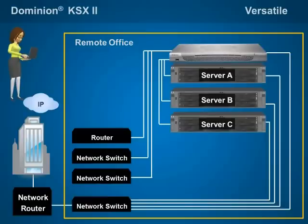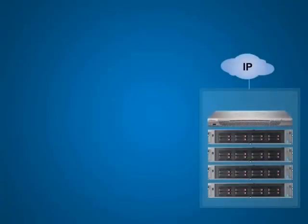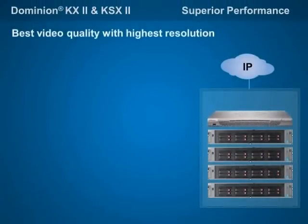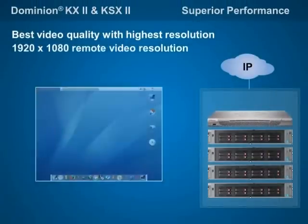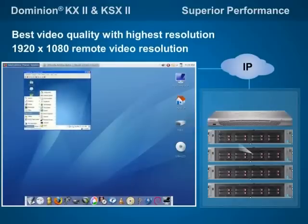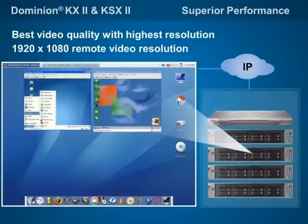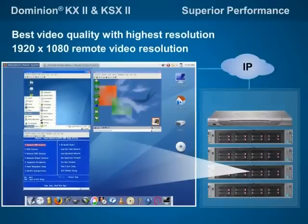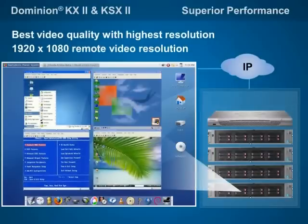Let's take a closer look at the innovative advancements achieved in Raritan's KVM over IP solutions. The Dominion KX2 and KSX2 families feature fourth-generation KVM over IP technology, which provides truly impressive remote video performance. You can see multiple server sessions at once, viewing each screen with real-time performance. Raritan is the first to offer 1920 by 1080 HD resolution.